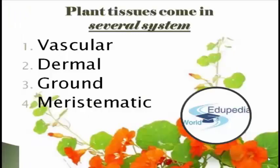We are already done discussing the several systems in terms of plant tissues. In summary, we have four systems: vascular, dermal, ground, and meristematic. Thank you for listening.